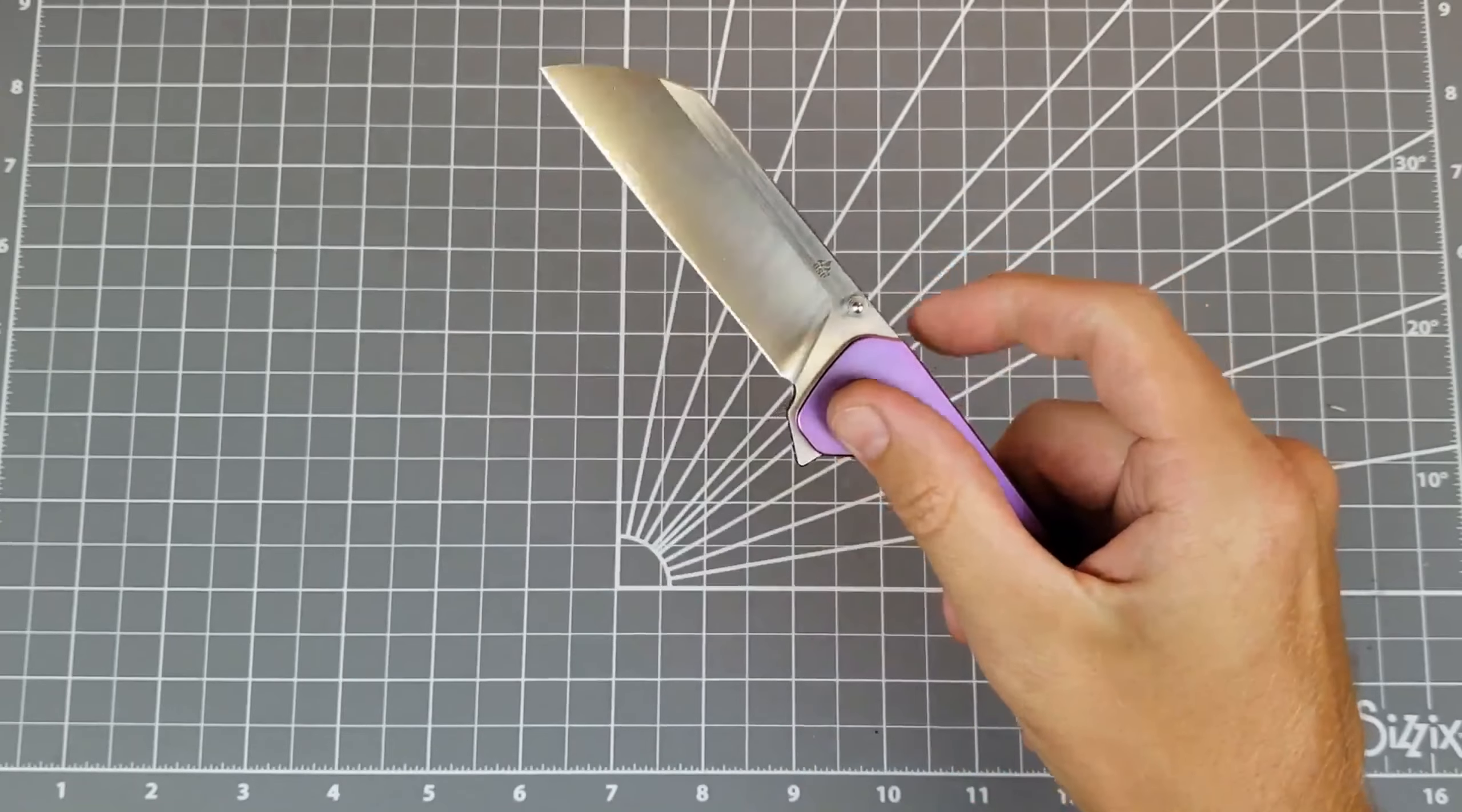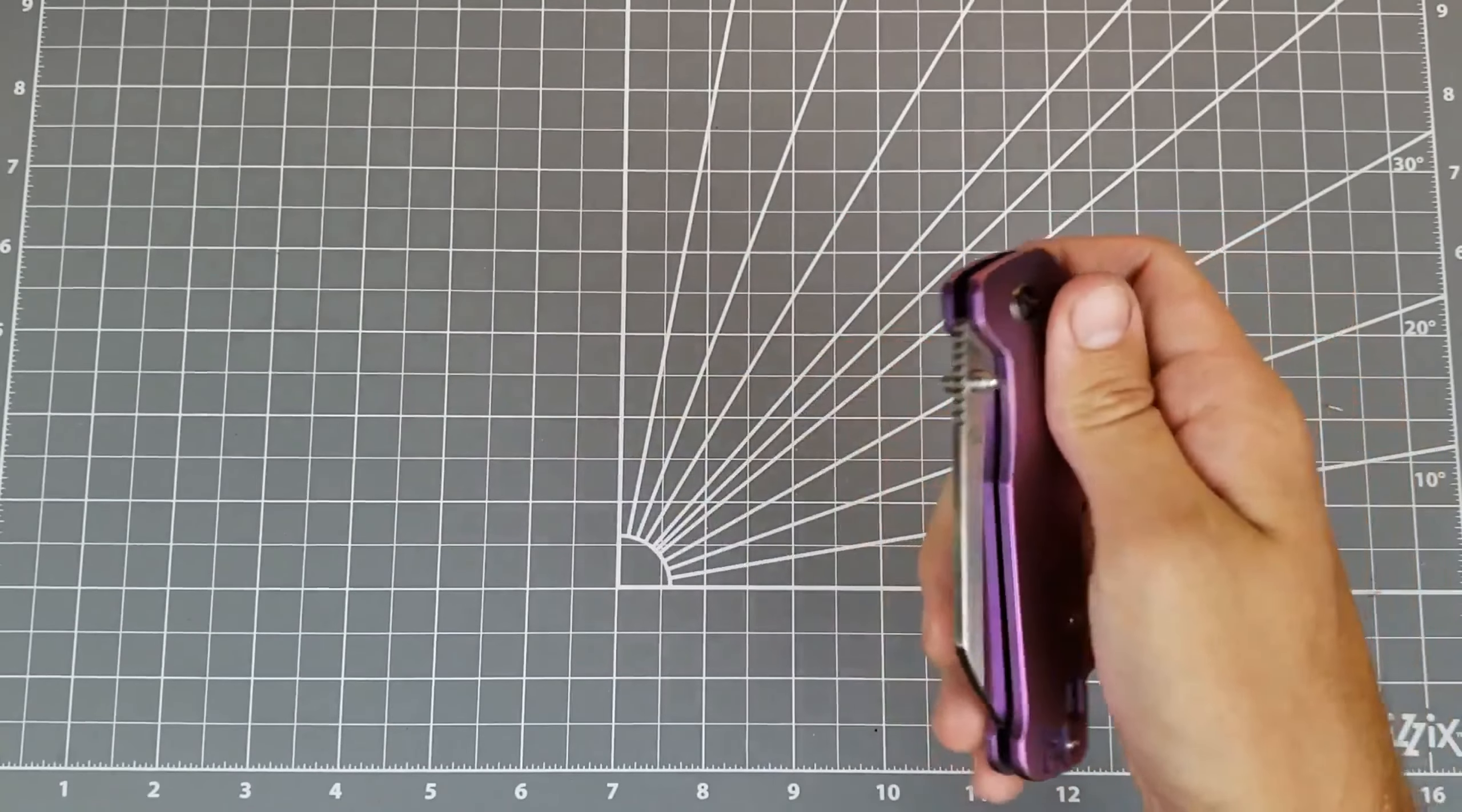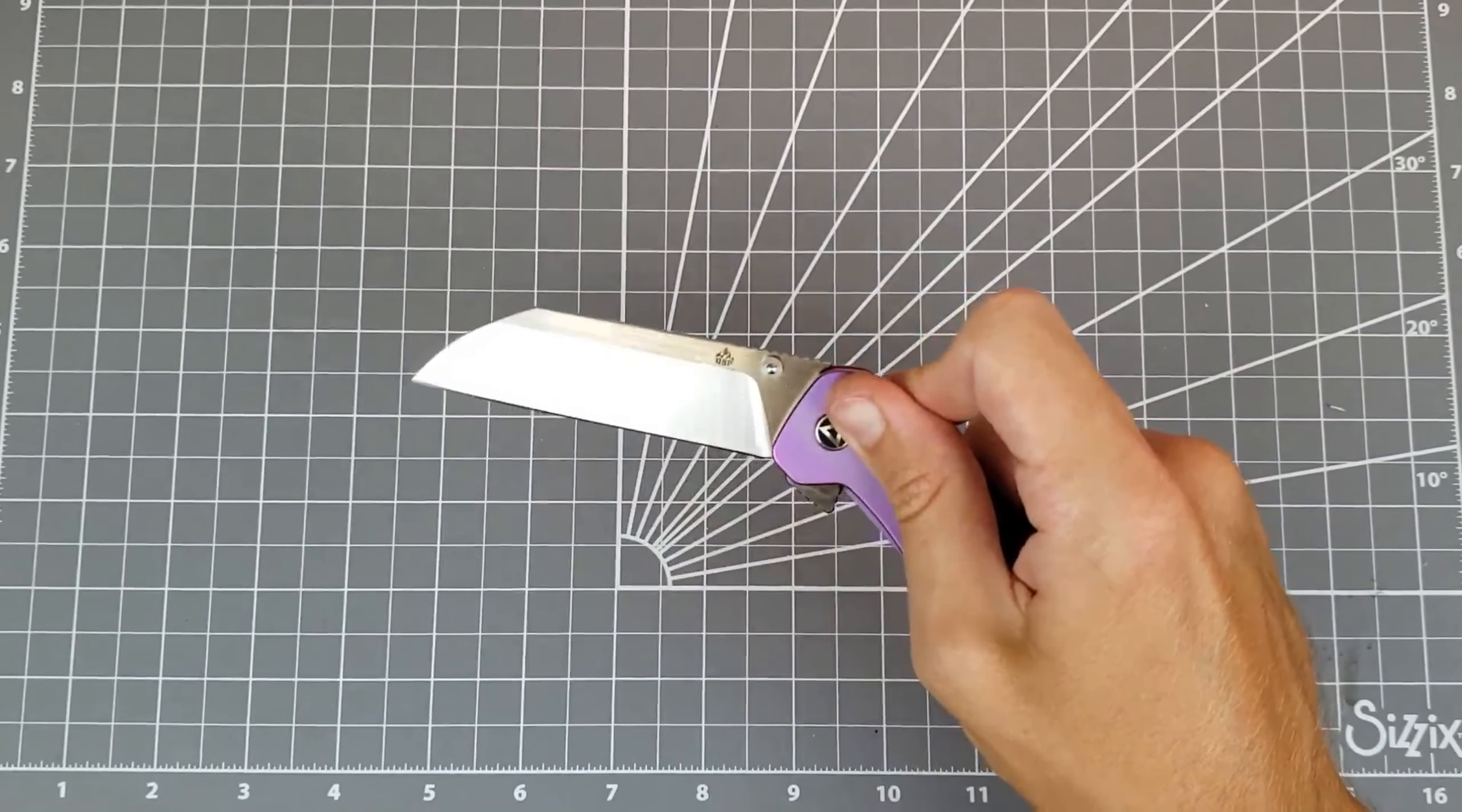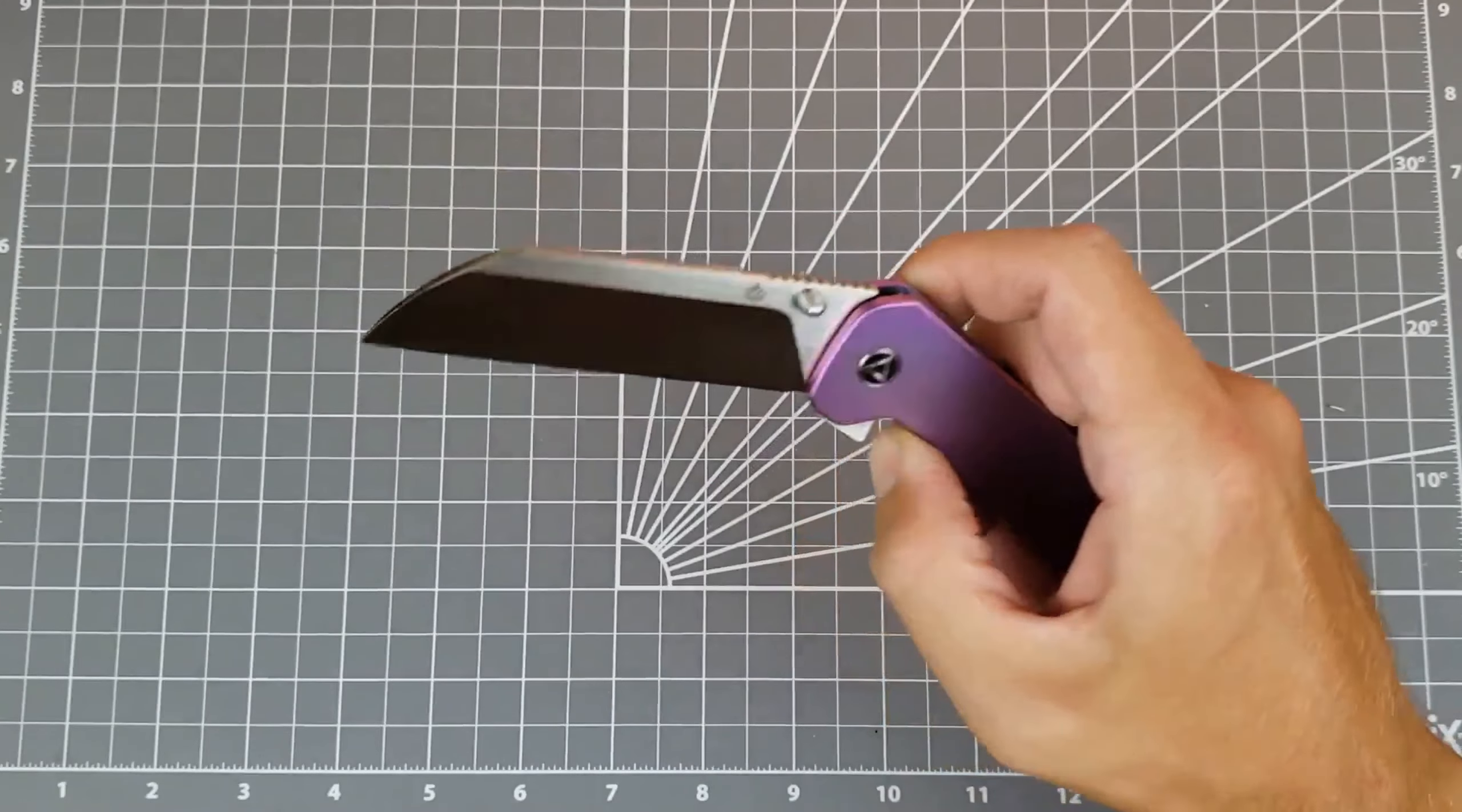Now off the bat, flipper. Detent feels nice for that. Action feels good. Snaps open. You can fail it if you try, but if you just give it a flip that any reasonable person would, really easy to open.